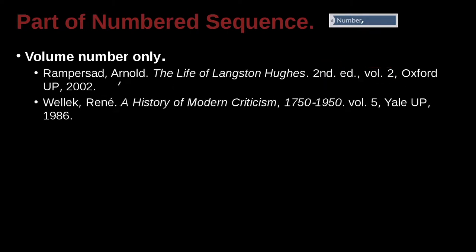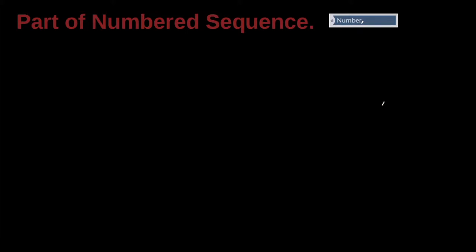Wellick Rene is the author — last name first, first name last — The History of Modern Criticism, 1750 to 1950. That's the title of the book. It is Volume 5, Yale University Press, 1986. So you can have the volume without a number. It depends on the publisher, but this is exactly what we're saying. This helps you to find that specific book.